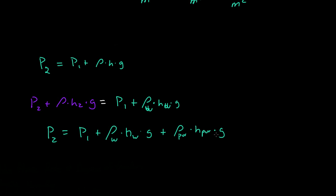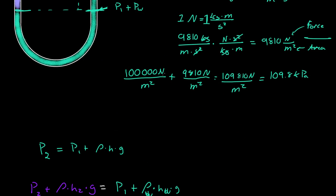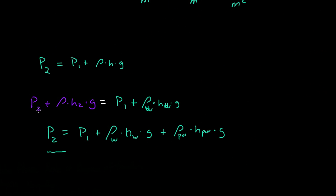So that's how you find the second pressure if you have any other fluid - and you can just keep doing that. Maybe you have even another fluid, and you just add the density of that fluid times its height times gravity. That is manometers in the very basic concept. The key equation is: P2 plus the density of fluids on that side equals the pressure on the other side times density times height times the gravitational constant.